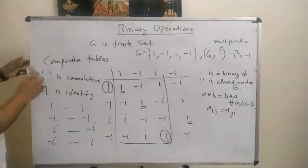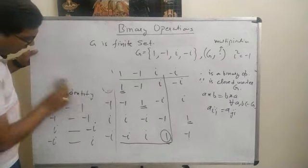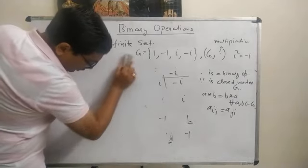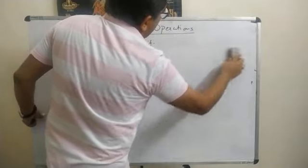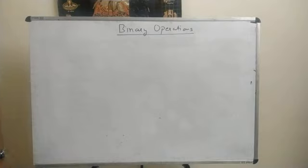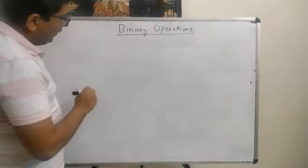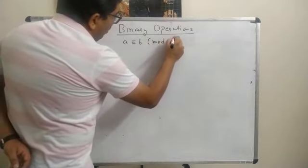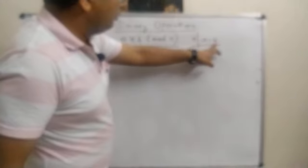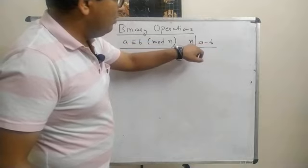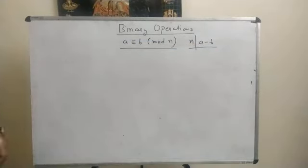Now we will discuss two important algebraic structures that we will use in further lectures. Recall from set theory: we define an equivalence relation where A is congruent to B mod N, which means N divides A minus B, i.e., the remainder of A minus B when divided by N equals 0. Using this, we define a set Z_N.